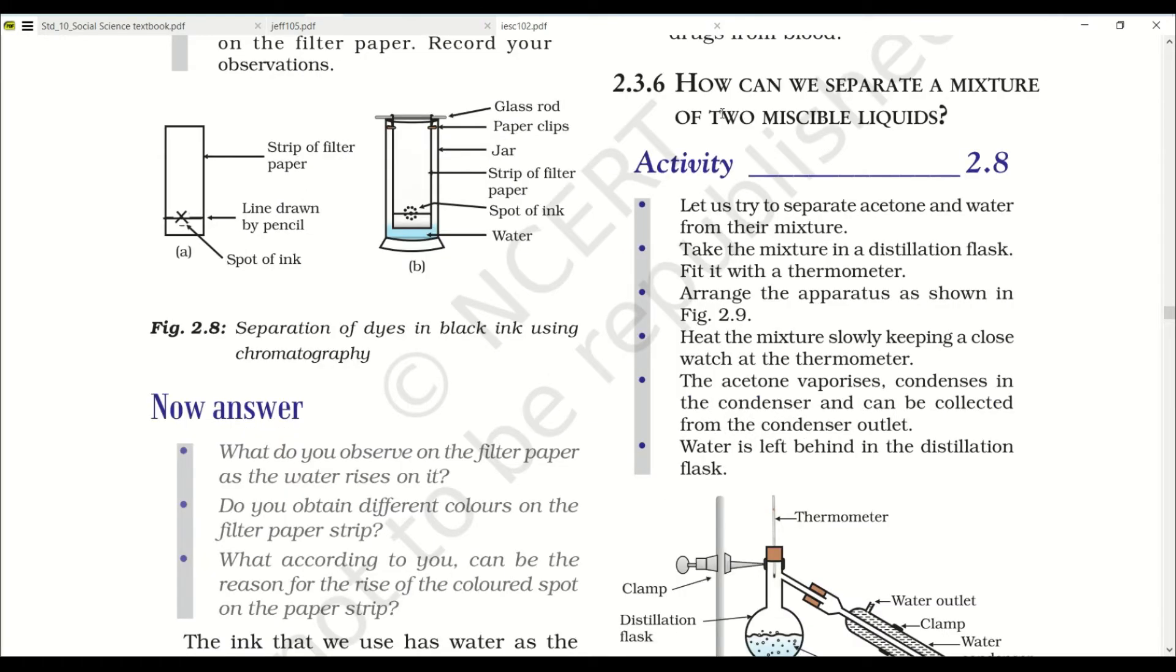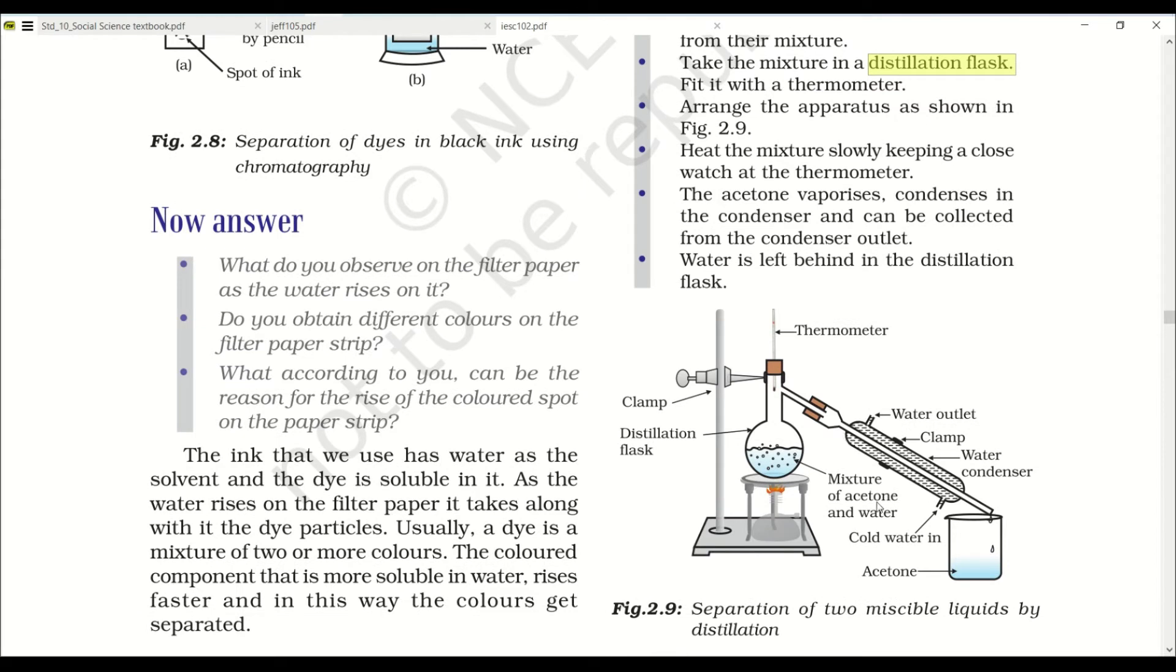How can we separate two miscible liquids? Now immiscible liquids were those liquids which were naturally separated, didn't mix with each other. But what about the liquids that are mixed with each other? Let us try to separate acetone and water from their mixture. Take the mixture in a distillation flask. Here you can see an apparatus and this apparatus is used for distillation. Two miscible liquids are there, water and acetone. They both mix with each other and cannot be separated easily. You have to use distillation for it.